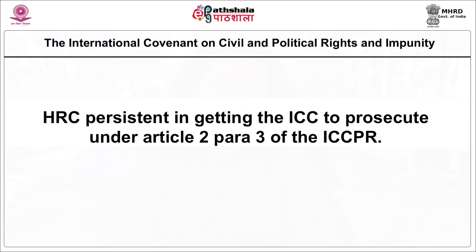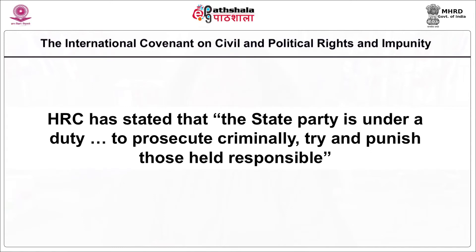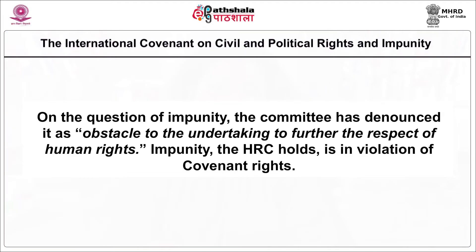The Human Rights Committee has not yet recognized a victim's right to prosecute a perpetrator under the ICCPR. The committee has been persistent in urging the International Criminal Court to prosecute under Article 2, paragraph 3 of the ICCPR, stating that 'the state party is under a duty to prosecute, criminally try, and punish those held responsible.' The committee has been very hesitant to fully bestow, by means of interpretation, individuals the right to prosecute anyone under its provisions. On the question of impunity, the committee has denounced it as an obstacle to furthering respect for human rights.